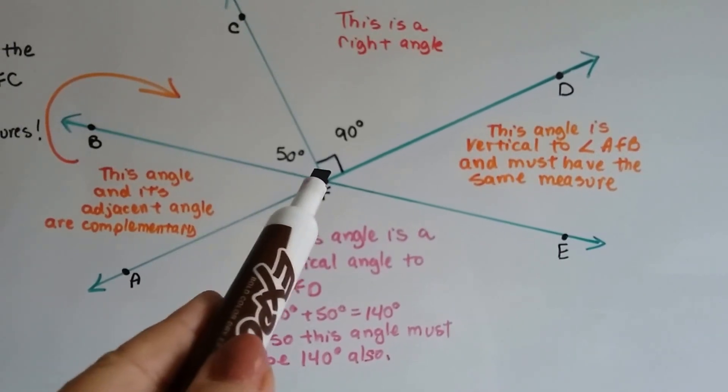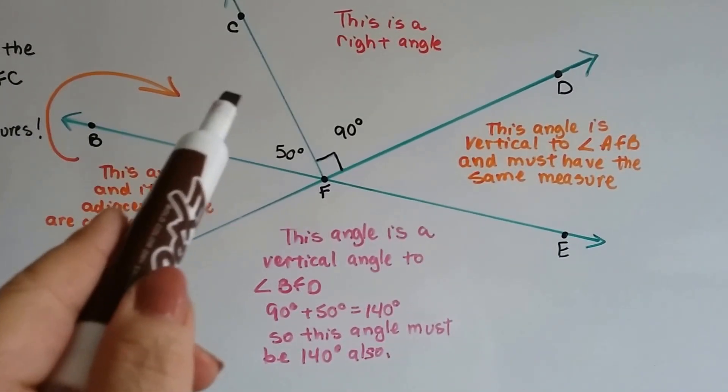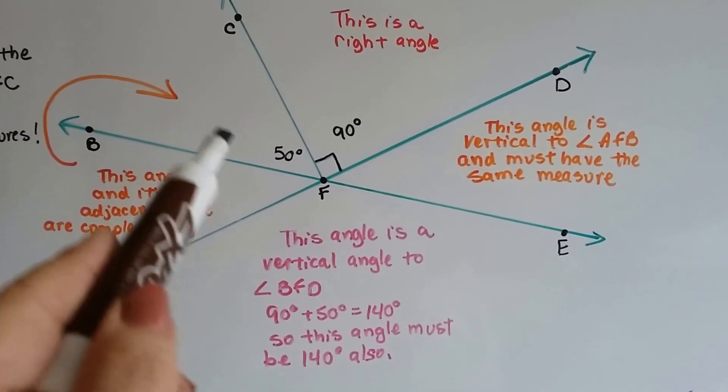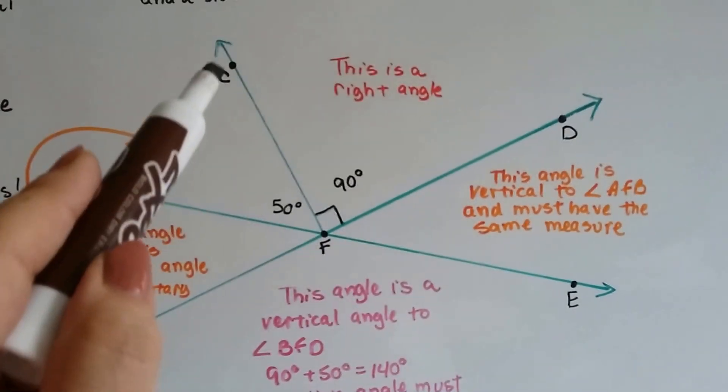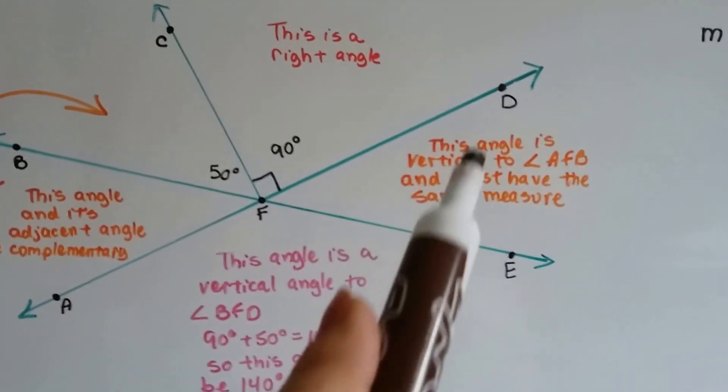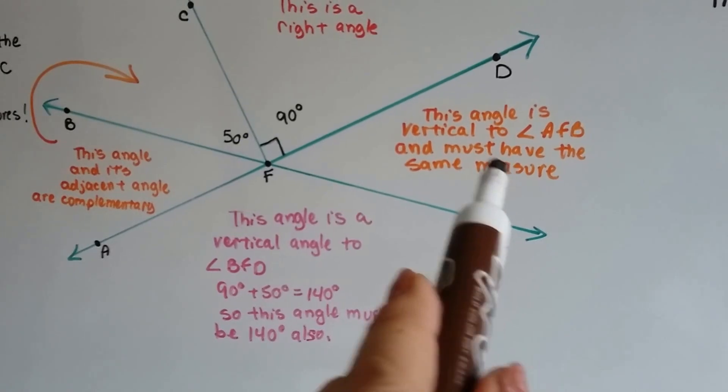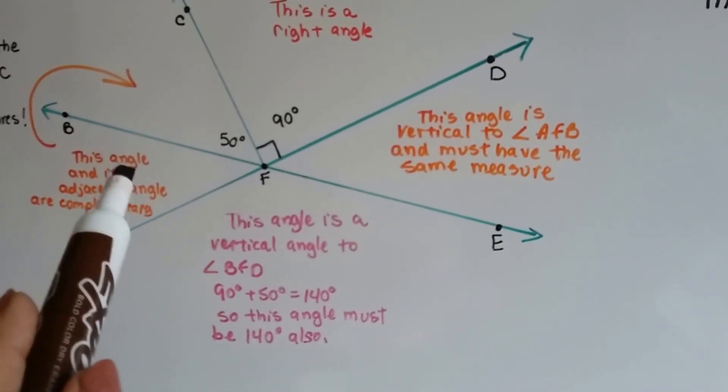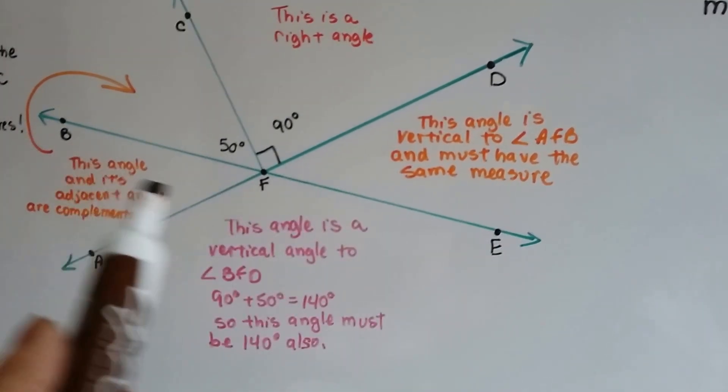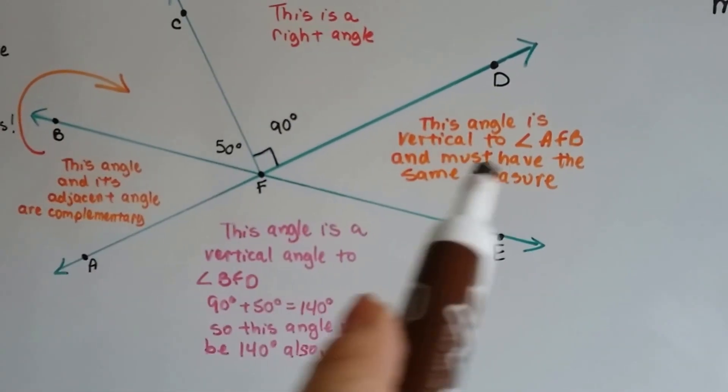So this would be angle AFB. That would be this angle. This angle right here would be BFC, and it's 50 degrees. Angle CFD, that's the right angle that's 90 degrees. Angle DFE, well, this is vertical to this one. So whatever this angle measures, that's what this angle measures. They're opposite each other. They're verticals. So if we find out one of these, we'll know the other one. We'll know the measure of the other one.